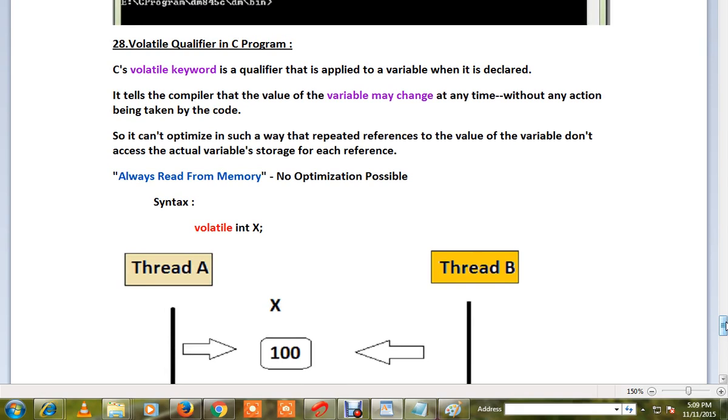Volatile keyword is a qualifier that is applied to a variable when it is declared. It tells the compiler that the value of the variable may change at any time without any action being taken by the code.